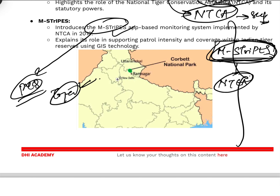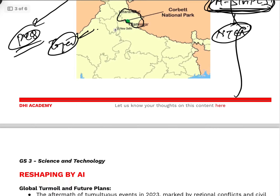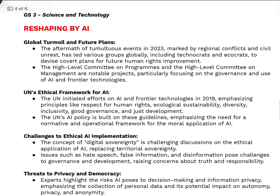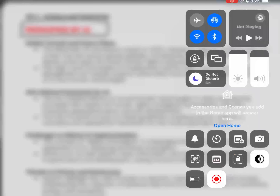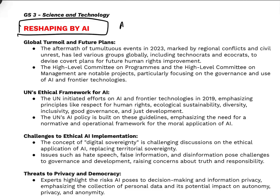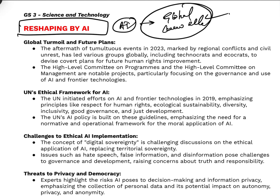Corbett National Park is located in Uttarakhand district of Uttarakhand state. Moving to the next article — 'Reshaping by AI' — this article dominantly speaks about artificial intelligence and its global governance concerns. AI is being dominantly used yet dominantly unregulated.